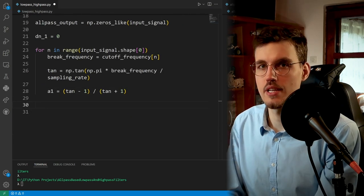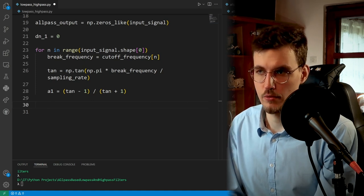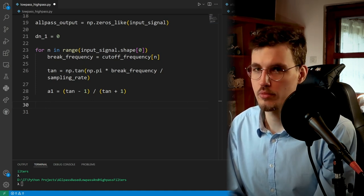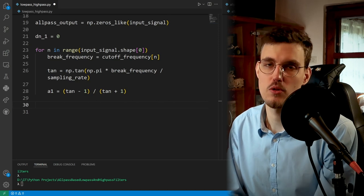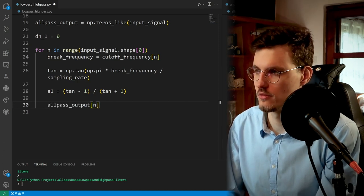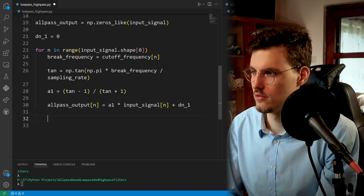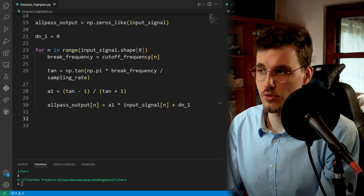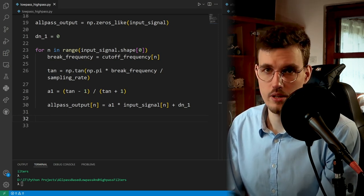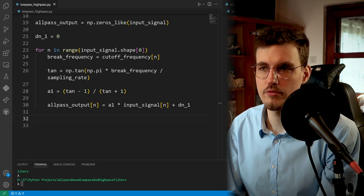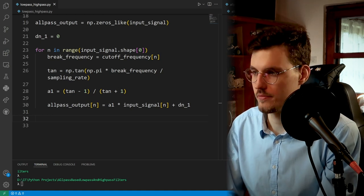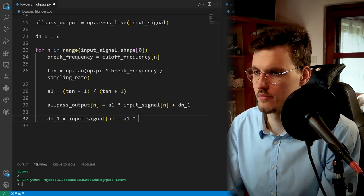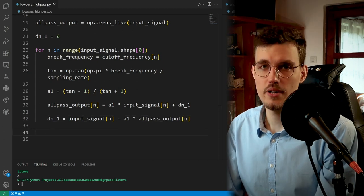And now comes the all-pass filter difference equation. Again, if you're unsure, please check out the all-pass filter video or the article. Finally, we need to store a special variable in the all-pass filter buffer for the next iteration.